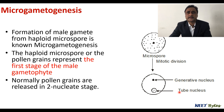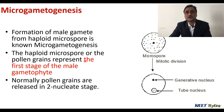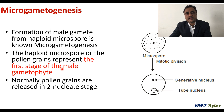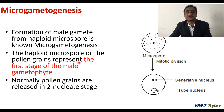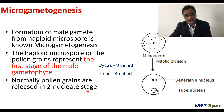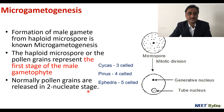The haploid microspore is the first stage of the male gametophyte. Normally, pollen grains are shed in a two-nucleate stage in angiosperms. In gymnosperms, the stage varies: in Cycas it is a three-cell stage, in Pinus a four-cell stage, and in Ephedra a five-cell stage.